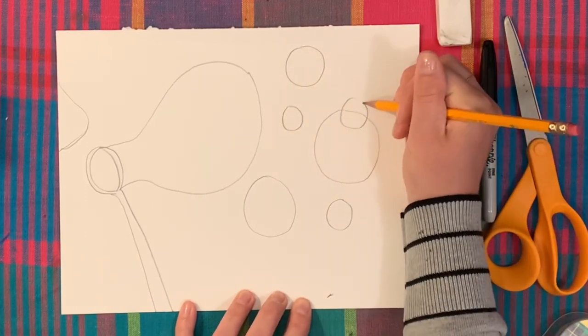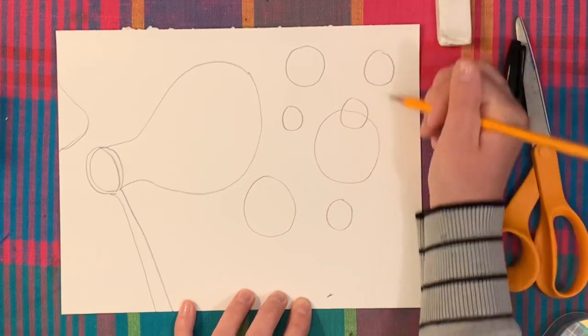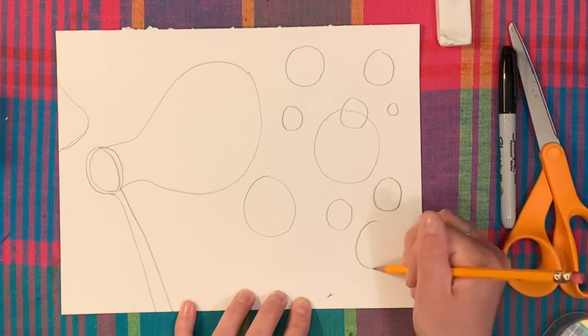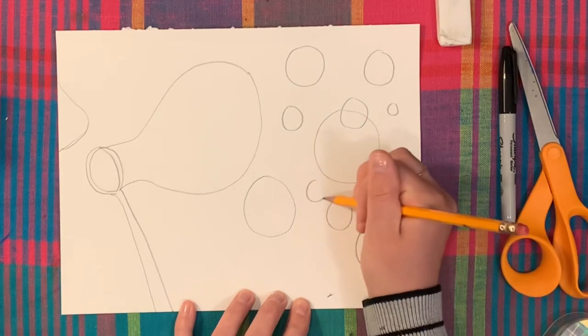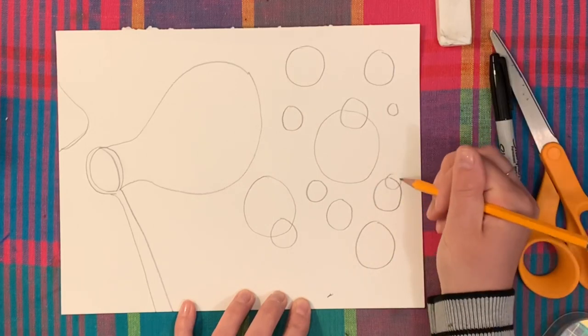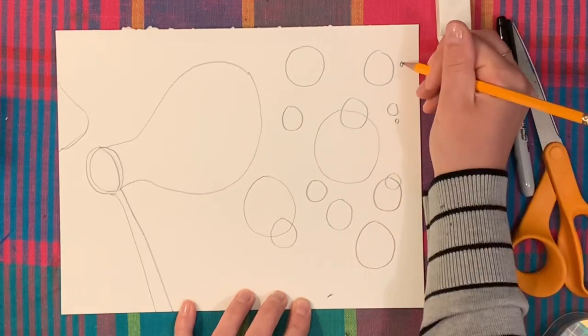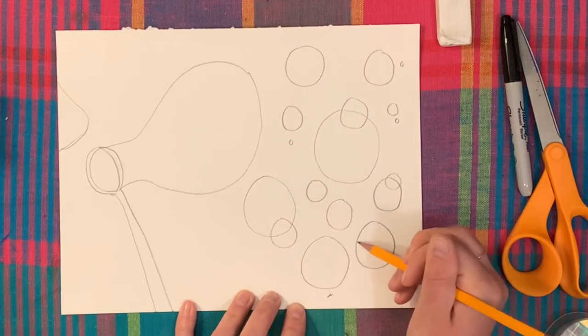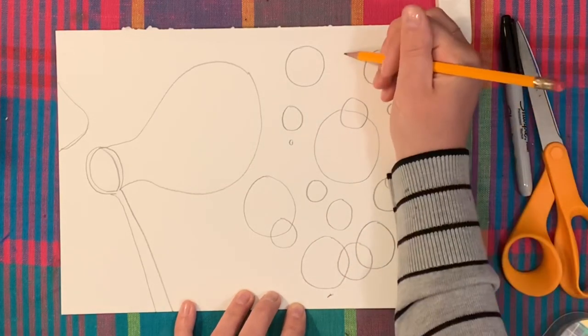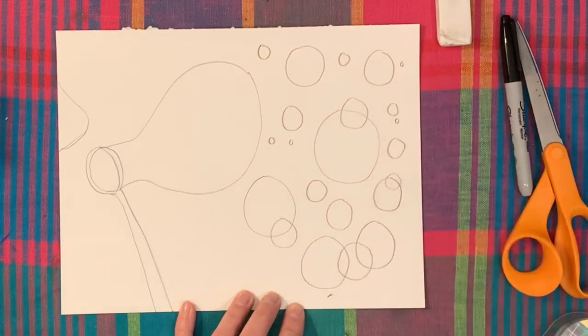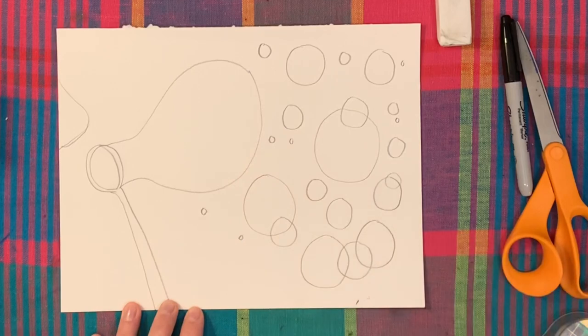I'm just going to kind of freehand it. But all you're doing is adding a variety, which means different sizes, all around the edge of your paper. And you can even have them overlap like real bubbles do. So I'm making some really small. I'm making some bigger ones. I'm going to make some that connect to each other. Just like that. I think I'm happy with what I have.